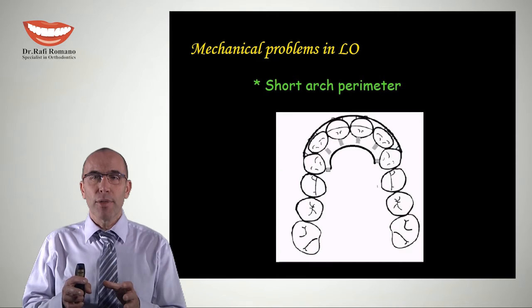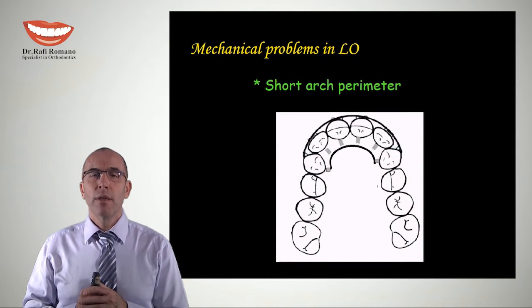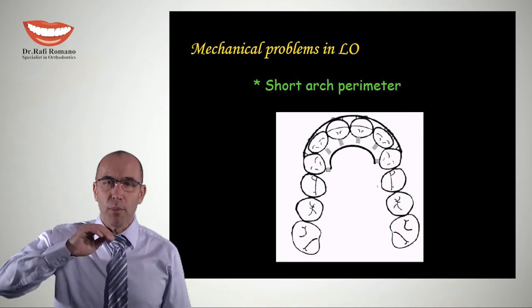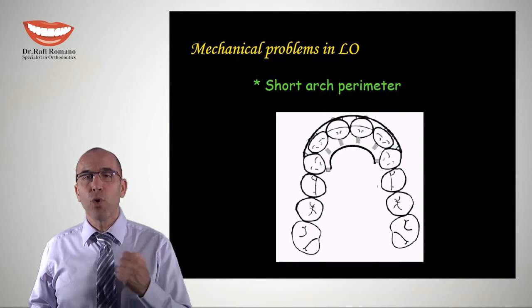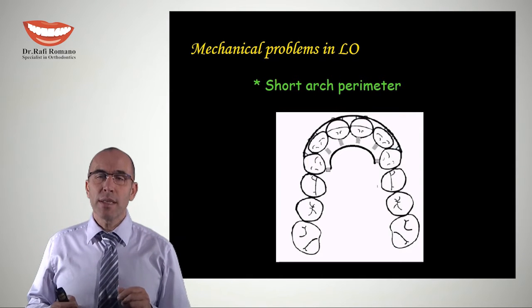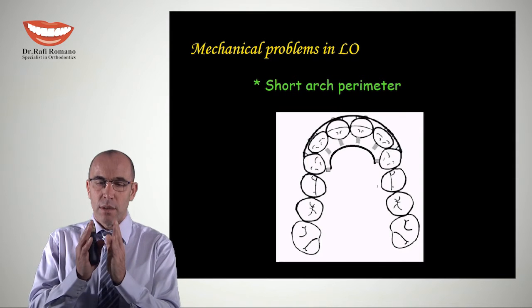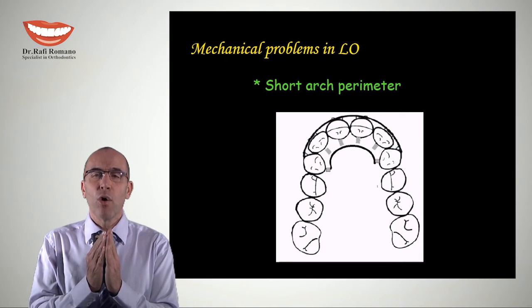In lingual orthodontics, we have a very short arch perimeter because we're treating from the inner side of the arch, which is around 40% smaller than the outer arch. This causes a much smaller inter-bracket distance, and the wires become more rigid because there is less freedom between brackets.